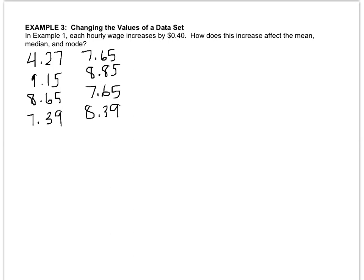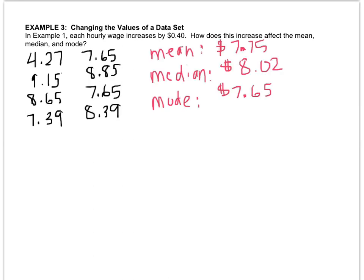Please recalculate the mean, median, and the mode now. Alright, how did these values change with the increase? And, if I look at the other question, it looks like everything went up $0.40, right? Because the mean used to be $7.35, the median used to be $7.62, and the mode used to be $7.25. So, actually, everything went up $0.40. It increased all values by $0.40. If you have questions, write them down, and ask me when you come to class.